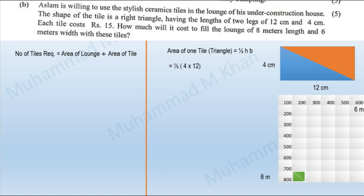Putting in the values of each leg given in the question for the triangle-shaped tile, the area of each tile comes out to be 24 centimeters square.